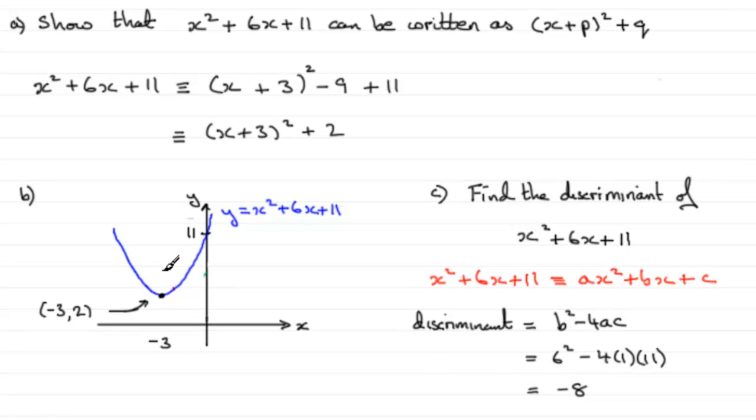If it equals 0, the discriminant, the graph would touch the x-axis. If it was a positive number, it would cut the x-axis in two places, and they would be the roots. Just thought I'd mention that.